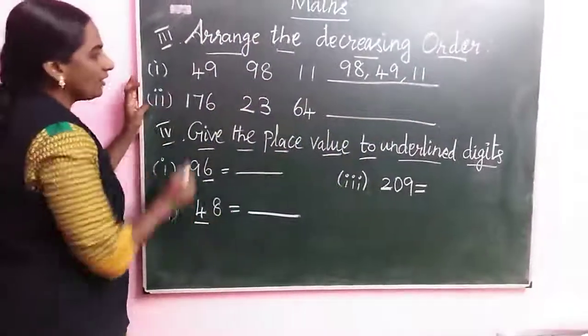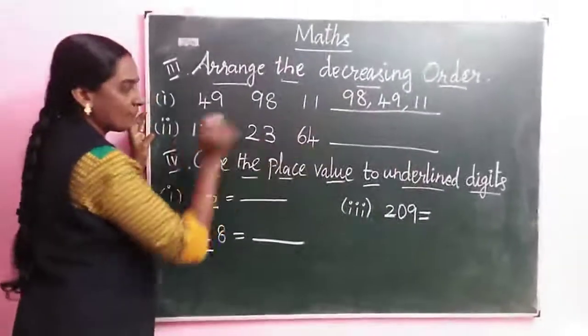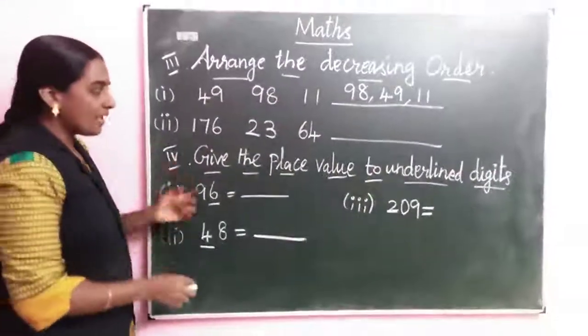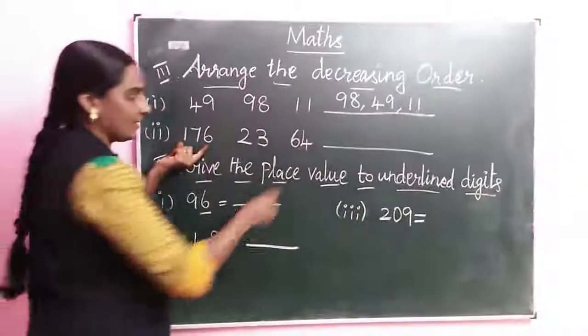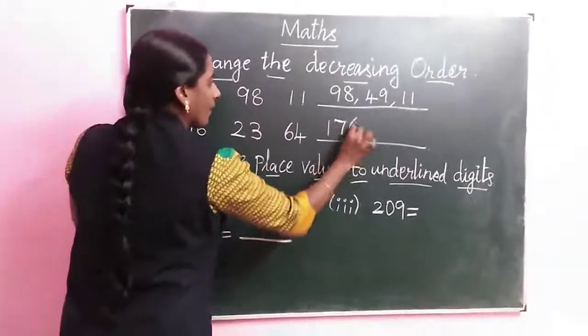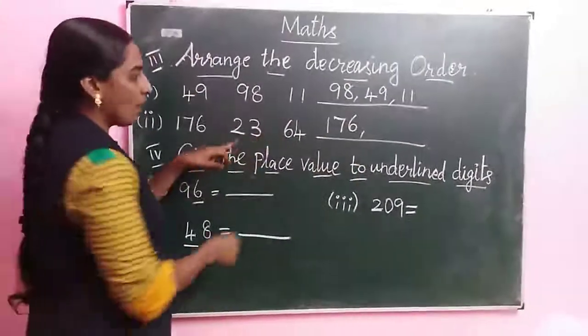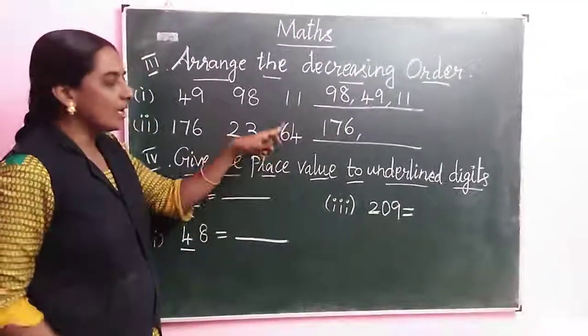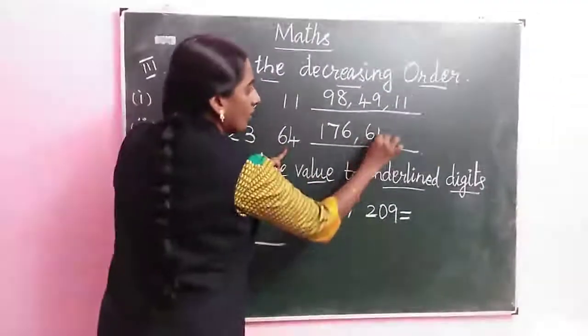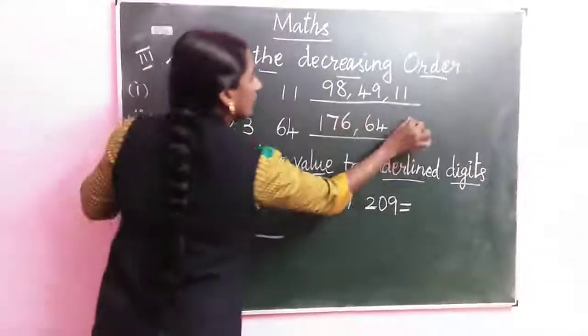Next one: 176, 23, 64. Now which is the big number? 176. Next, these two numbers: 23, 64. Which is the big number? 64. Last one, 23.